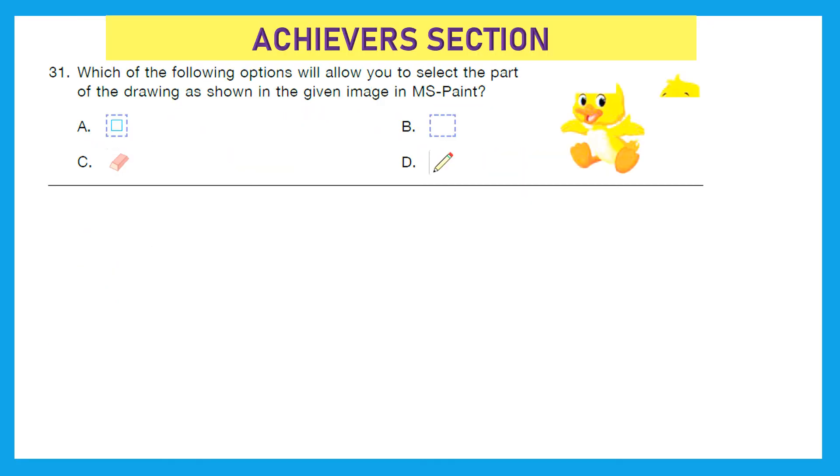Now we are moving to our last section, that is Achievers section, and it carries double marks for each question. So be very, very cautious while attempting these. Question 31: Which of the following options will allow you to select the part of the drawing as shown in the given image in MS Paint? So here it selected the forehead, and which of all these four options can this be done? It is option B.